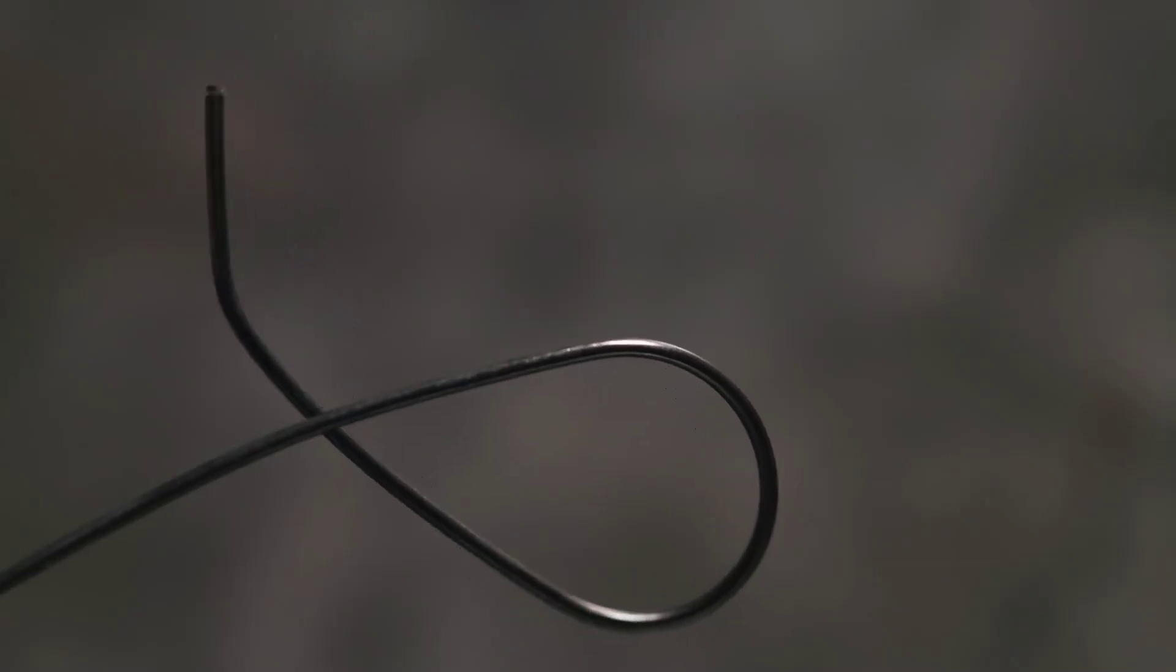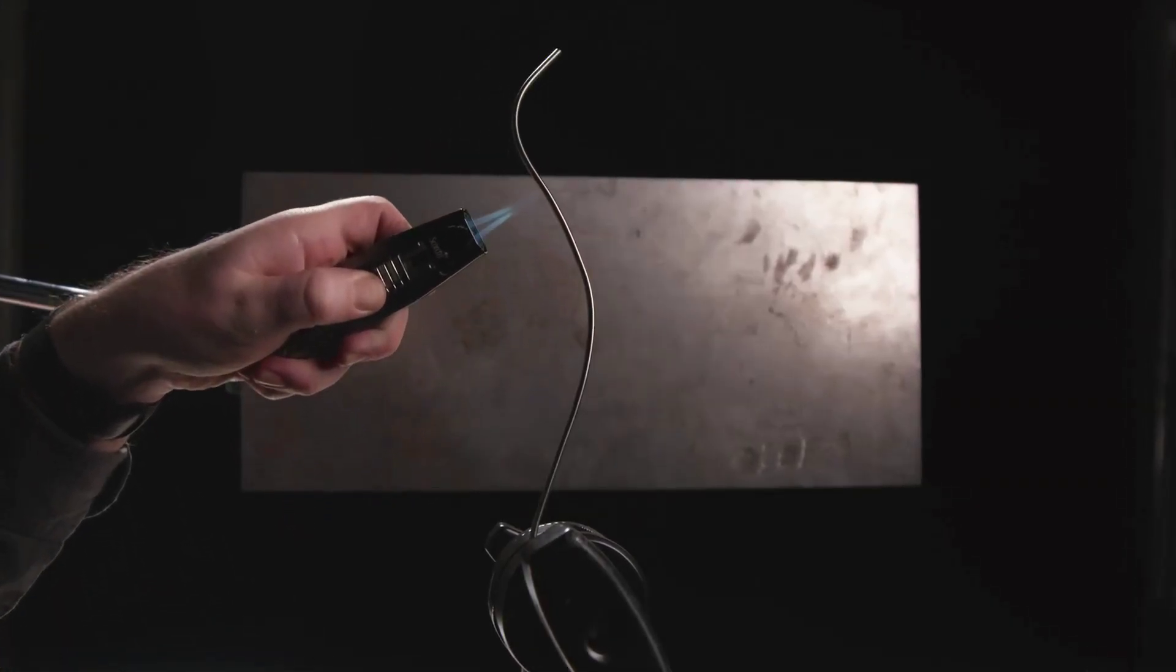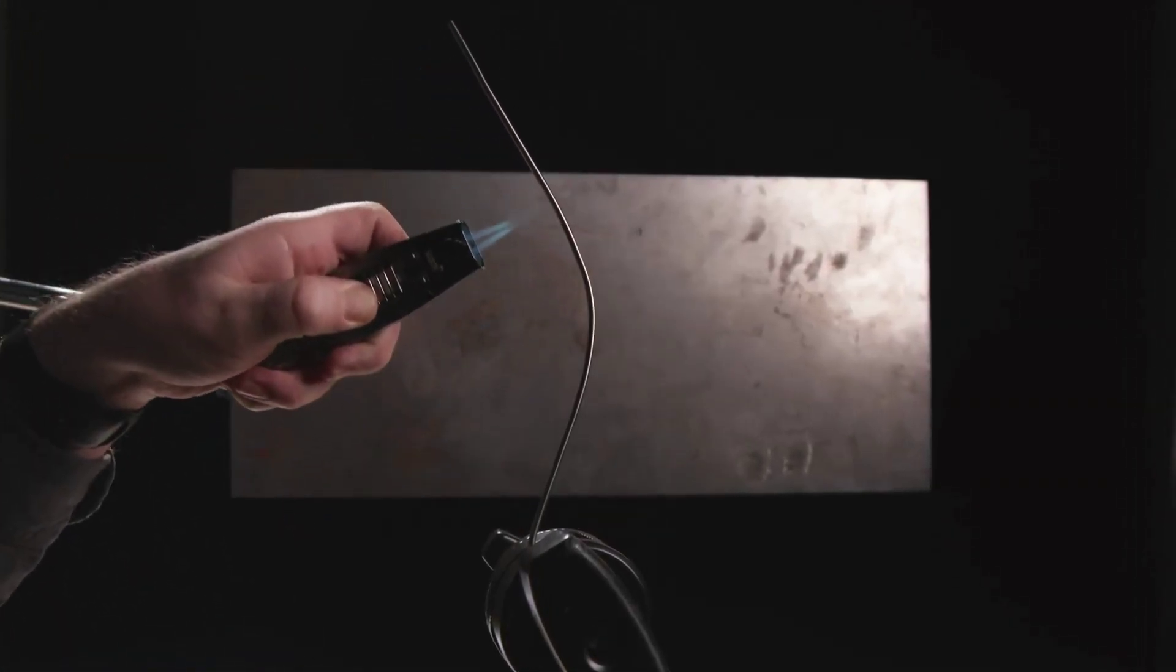Testing and Analysis: Conduct experiments to test the properties of memory metals, such as their transformation temperature, stress-strain characteristics, and fatigue resistance. Analyze test results to understand the behavior of SMAs under different conditions and refine their properties.